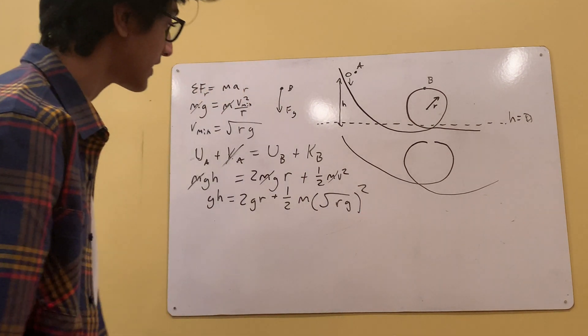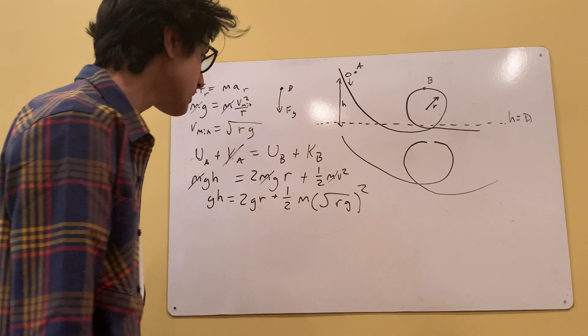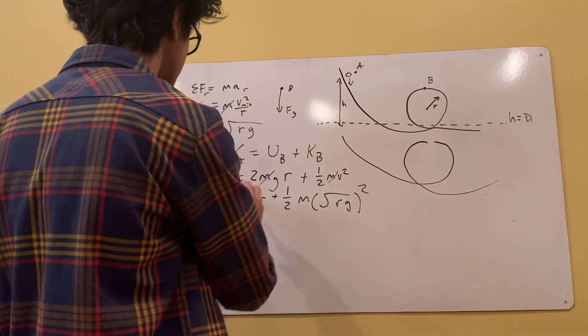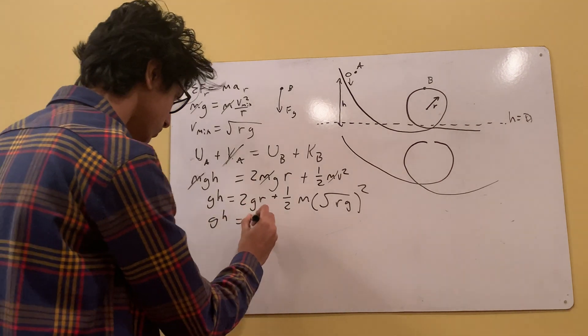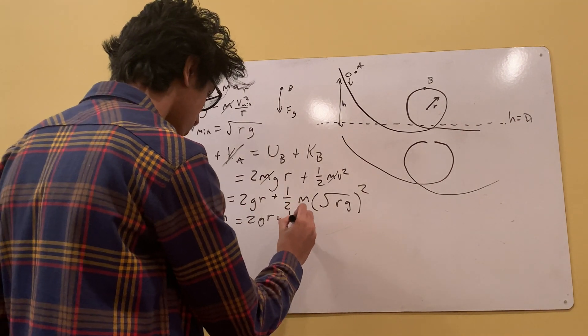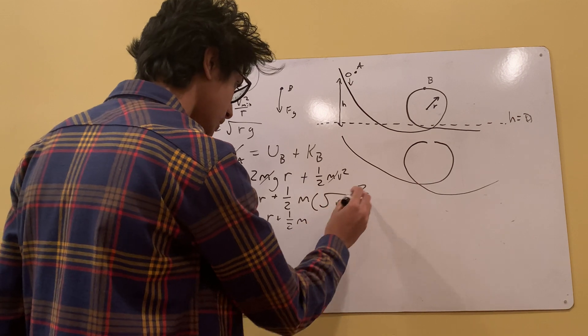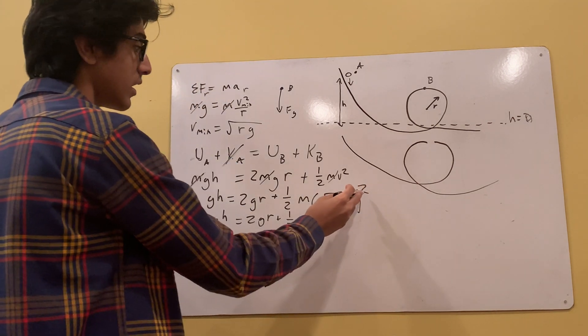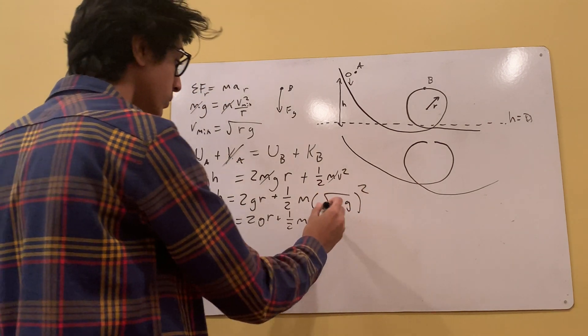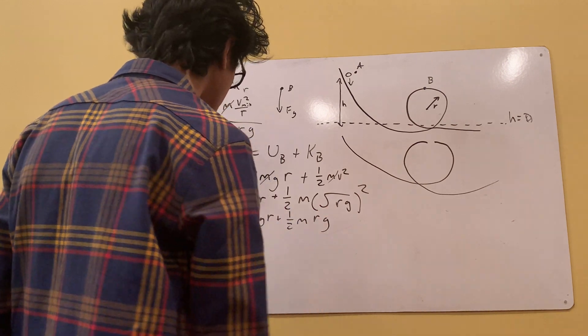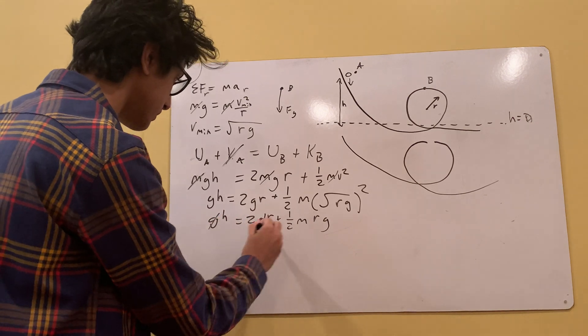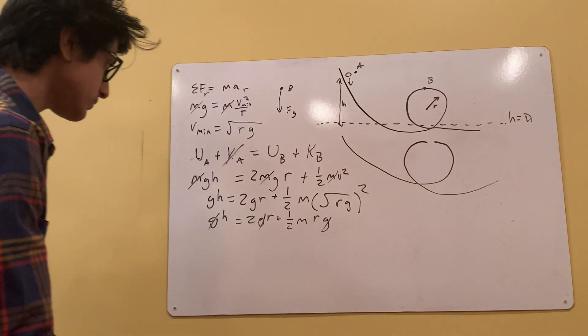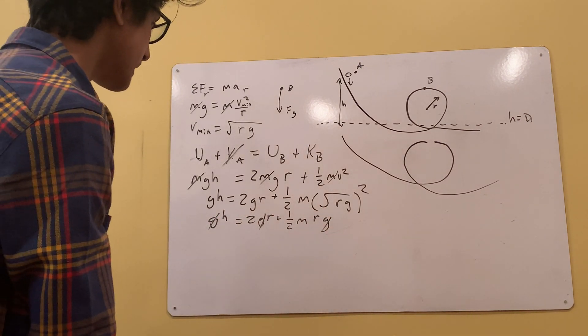And so let's simplify again. We have GH is equal to 2GR plus 1 half Rg. And that's perfect, because now I see G's on everything. Let's cancel all the G's out. And now what do we have? We have...